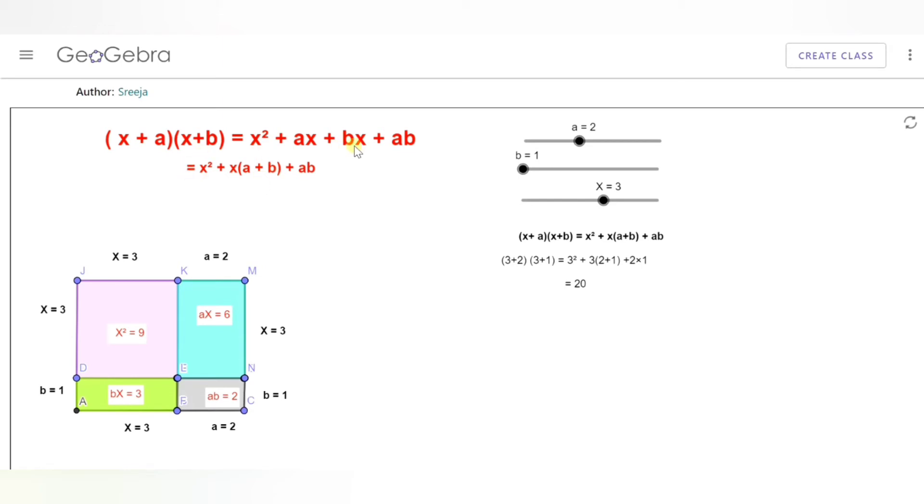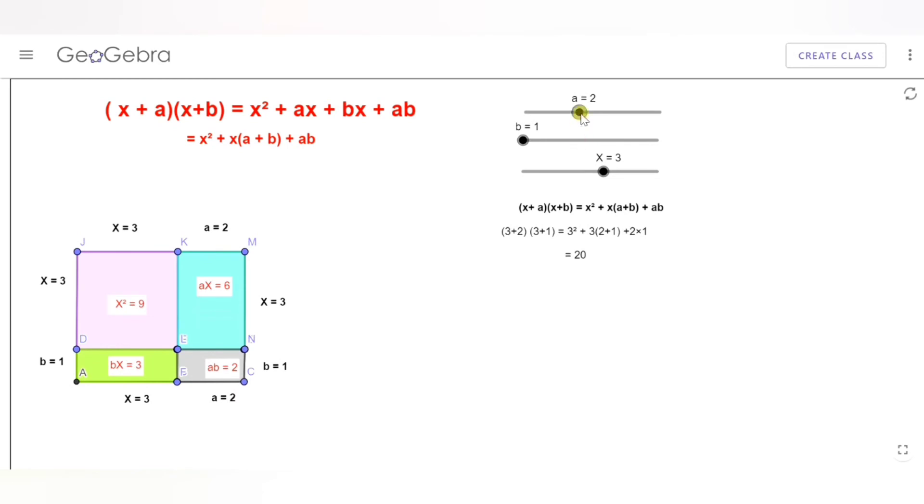Hence the identity is proved using the geometrical representation. Now if I change the value of a, b, or x, I have kept some sliders for a and b.